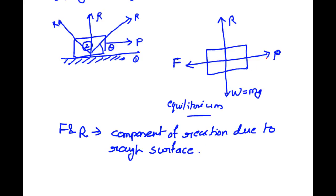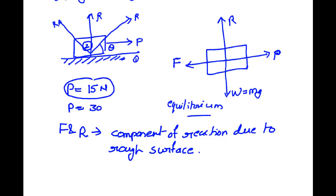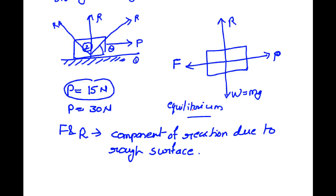If we consider the value of P is 15 N, the body is still in static condition — not moving — so this is the condition of equilibrium. If we increase the value of P to 30 N, this is also an equilibrium condition because the body is not moving. With the increase of P, the horizontal component F will also increase.